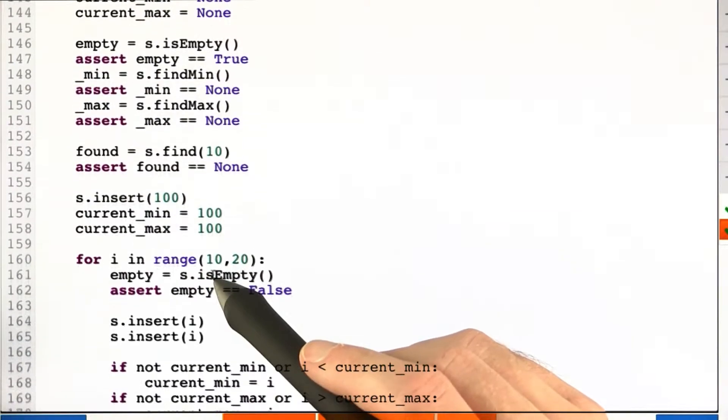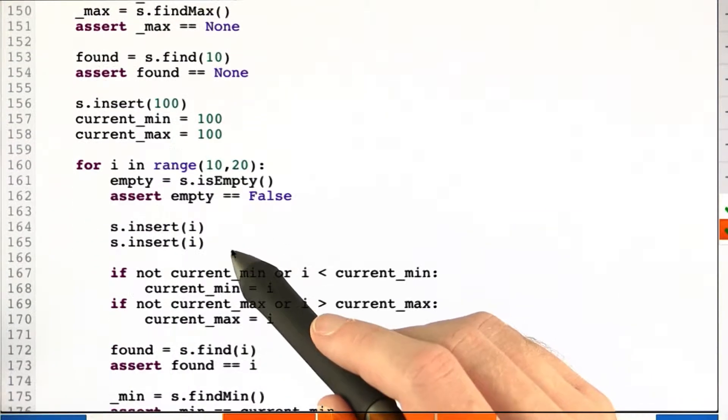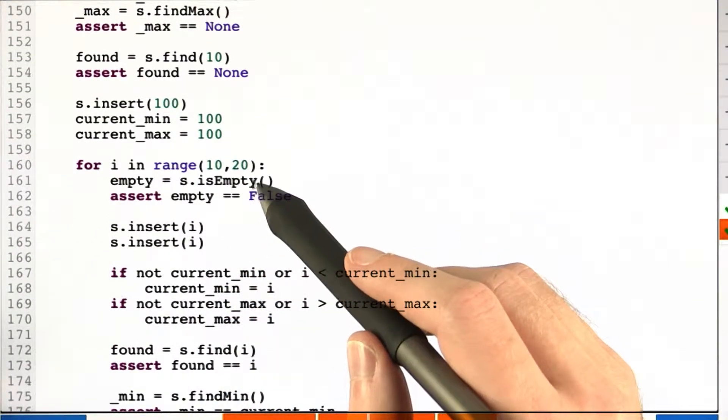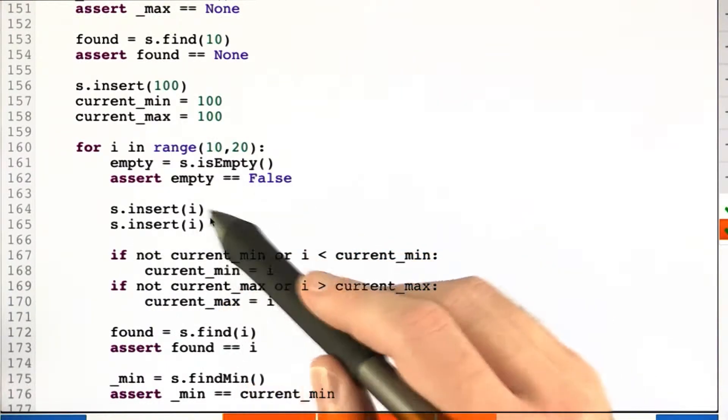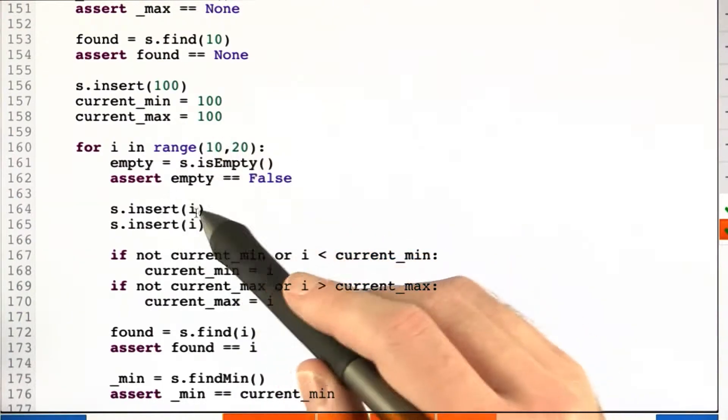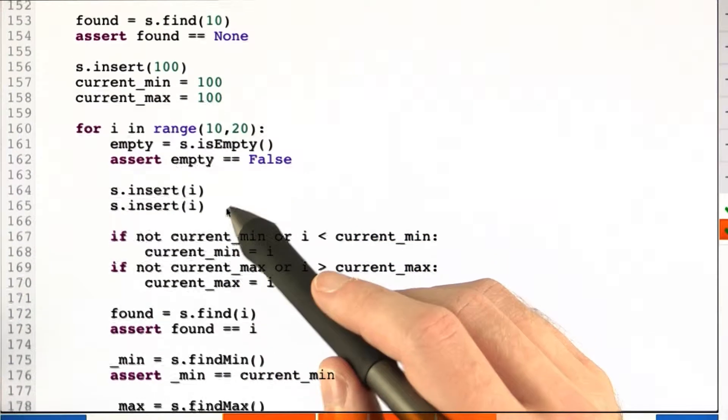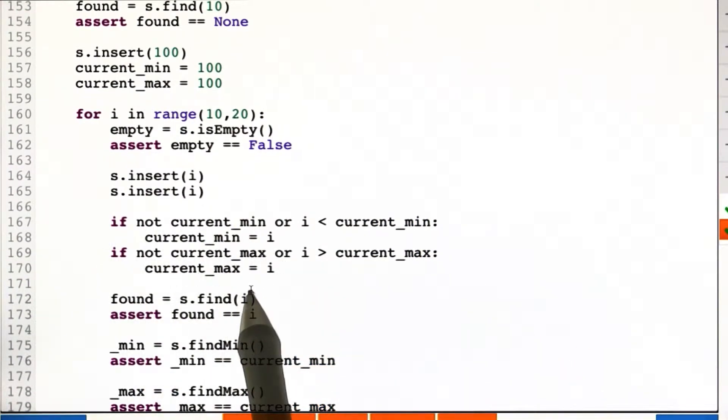And now we go through and for 10 examples, we check whether the tree is empty and it shouldn't be. Then we insert a new key into the splay tree for range 10 through 20 twice, just to see if that works okay. Update current min and current max.